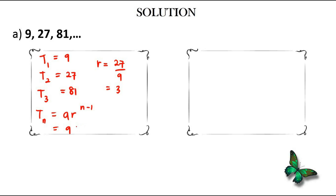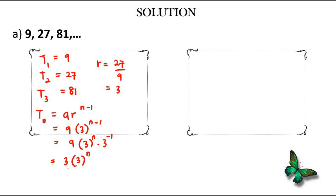Simplifying further: 9·3^(n-1) = 3²·3^(n-1)·3^(-1). Since 3^(-1) = 1/3, we get 9/3 = 3, so this becomes 3·3^(n-1). Since they share a common base, the exponents add together to give tn = 3^(n+1).